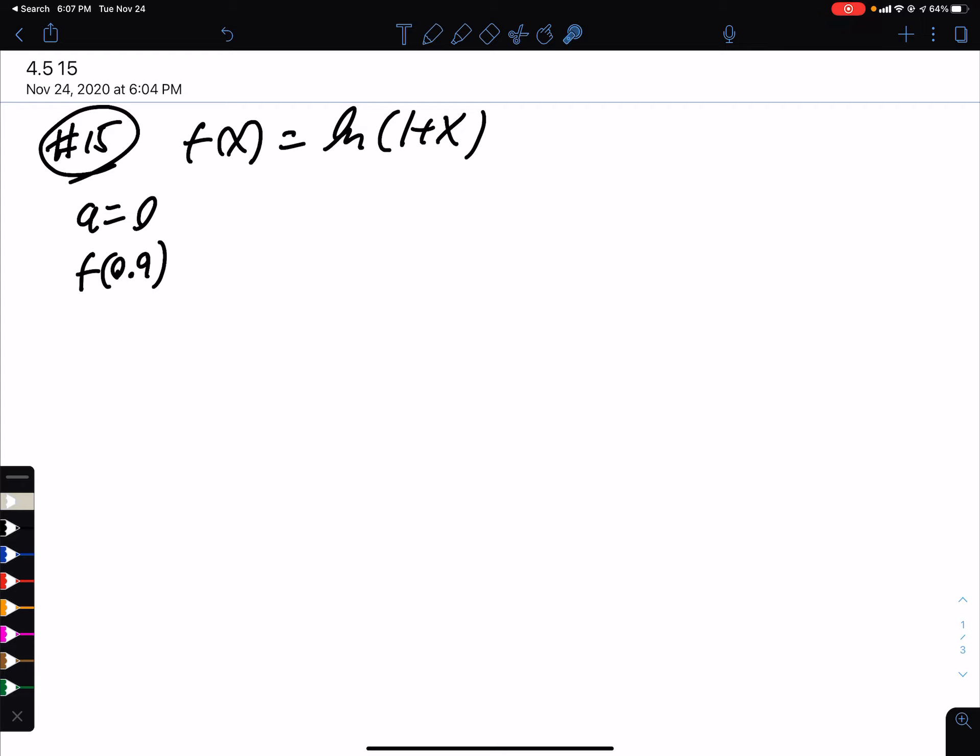So we want f at 1.9, or 0.9, which is ln at 1.9, but obviously we can't do that in our head. So we want to find a way to approximate it, and that's going to be through linear approximations.